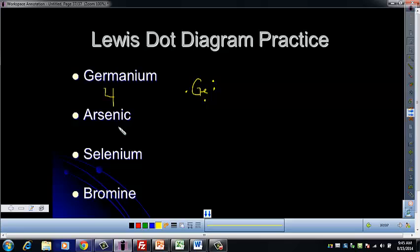Check on arsenic, pause. Okay, arsenic has 5. You probably have a little trouble finding arsenic. Arsenic, it's AS, not AR. So with that, it's going to be similar to nitrogen. So the first two go together and then the other three by themselves on the different sides.